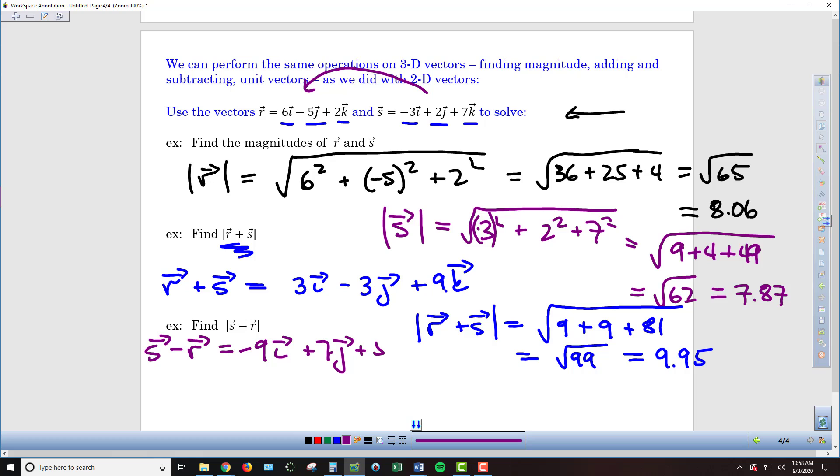So for the magnitude of S minus R, we've got the square root of 81 plus 49 plus 25. If we add those together, we get the square root of 155. 81 plus 49 gives us 130, 130 plus 25 gets us to 155. Then just taking the square root and rounding off, we'll again use three decimal places, so 12.4.